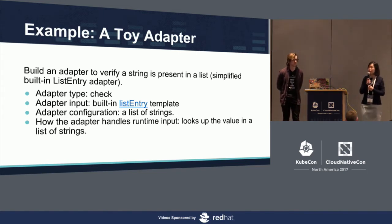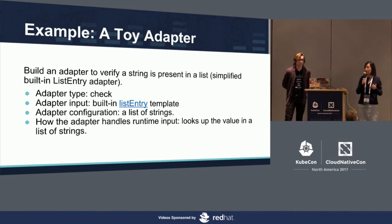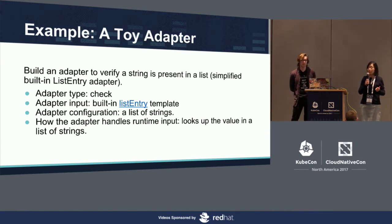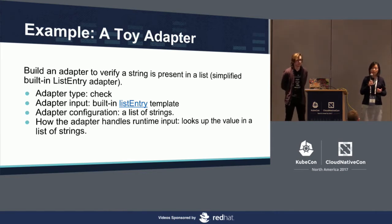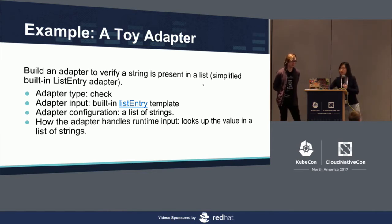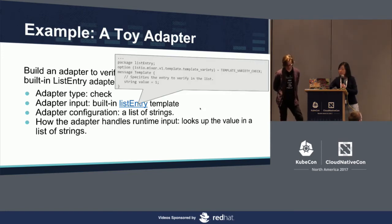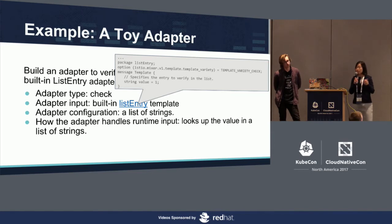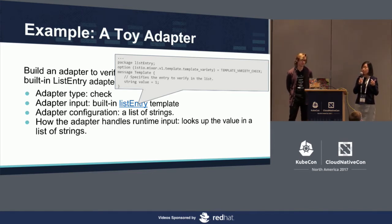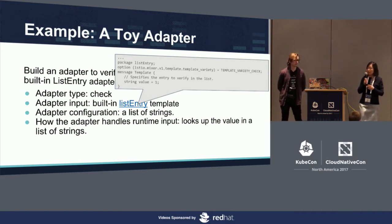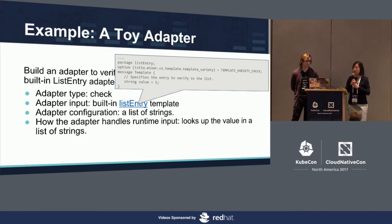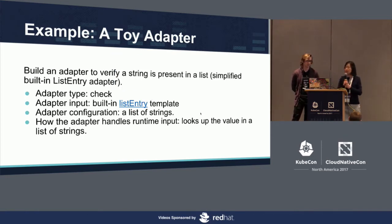Let's quickly walk through the steps of building a custom adapter using a simple example. Suppose we need to build an adapter to verify a string is present in a list. The adapter type is check. The adapter input is defined by the built-in list entry template, which only has one string value specifying the entry to verify in the list. The adapter configuration is a list of strings. At runtime, the adapter looks up the value in the list of strings and returns the check result.